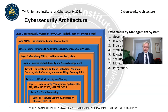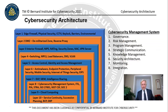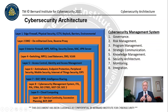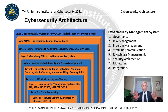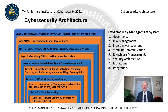The management system includes processes such as governance, risk management, program management, strategic communication, knowledge management, security architecture, monitoring, and integration. This is based on the Barnard Institute's mind map. Security architecture is a very important topic, and these videos are designed to build a course around that framework.